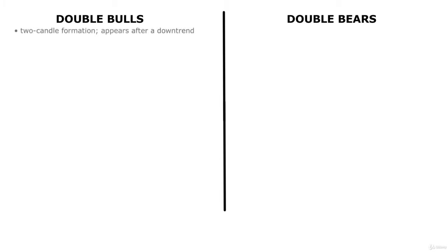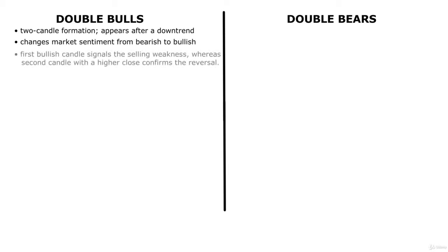The double bulls pattern marks an end to the downtrend and is a signal that buyers are entering in large numbers, hence changing the sentiment from bearish to bullish. While the first bullish candle signals the possible reversal, the higher closing price of the second candle confirms the change in trend of the market.